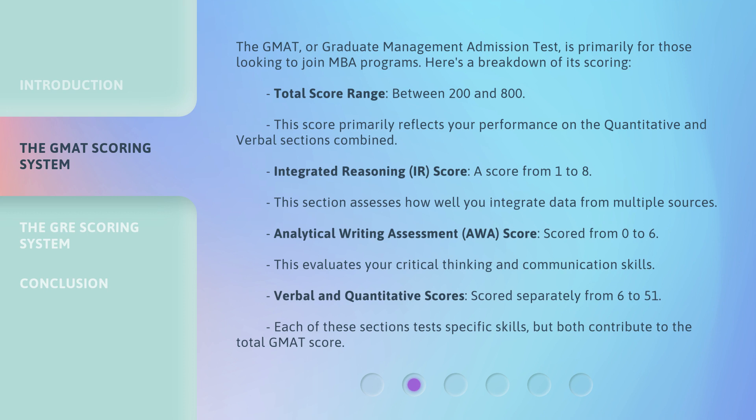Integrated Reasoning, or IR, score: a score from 1 to 8. This section assesses how well you integrate data from multiple sources. Analytical Writing Assessment, or AWA, score: scored from 0 to 6. This evaluates your critical thinking and communication skills.